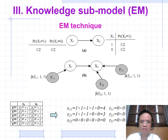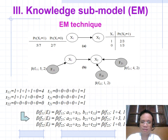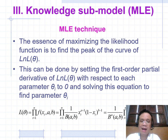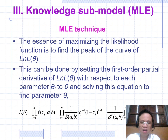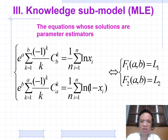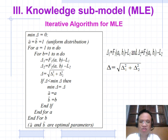The EM technique maximizes the likelihood function of theta to find the peak of the log-likelihood curve. This is done by setting the first-order derivative of the log-likelihood of theta with respect to each parameter theta_i to zero and solving the equation to find parameter theta_i — the equation whose solutions are the parameter estimators. This equation becomes a problem for MLE.